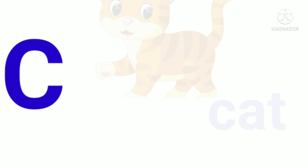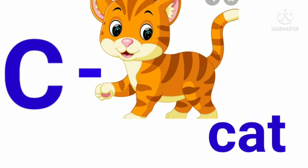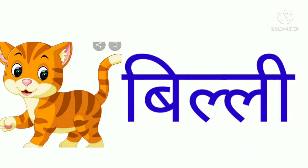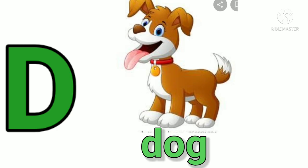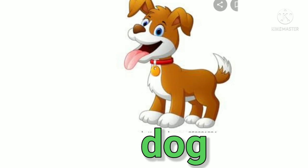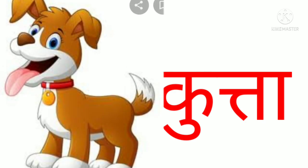C for cat. Cat means billy. D for dog. Dog means kutta.